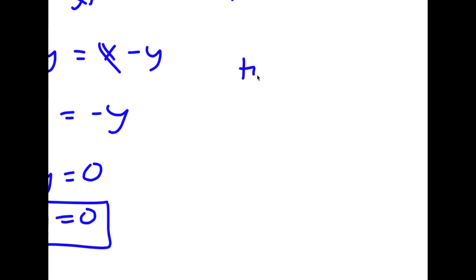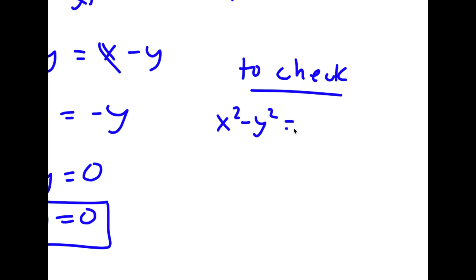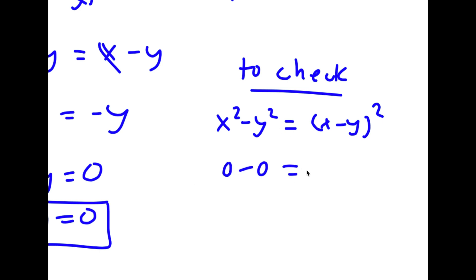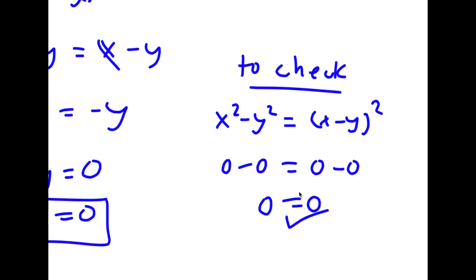To check: I had x squared minus y squared equals (x minus y) squared. If both x and y are equal to zero, then zero minus zero equals (zero minus zero) squared, meaning zero equals zero. ✓